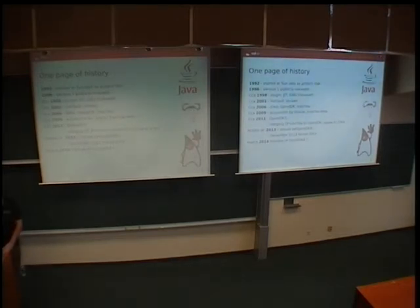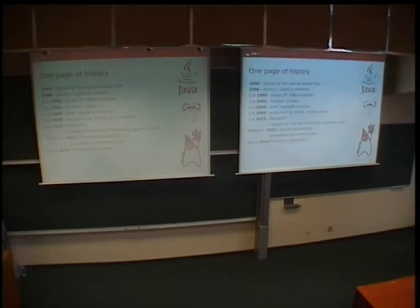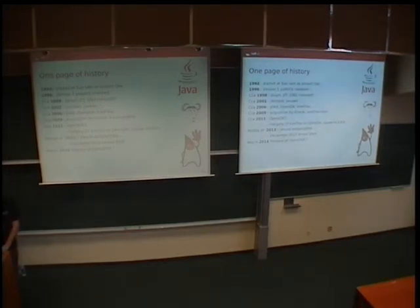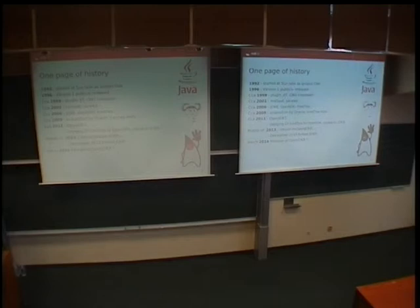JDK has been with us for a long time. It started in 1992 in the Sun labs, with JDK1 publicly released in 1996. In 1998 came the community reaction by creating GNU Classpath. Three years later came HotSpot — until that time Java was a purely interpreted language — through to 2006 when JDK6 was released.